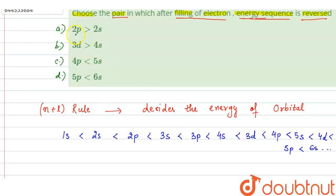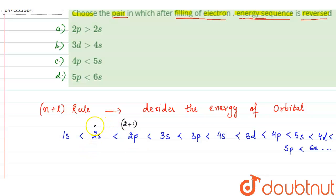In option A, it is given that 2P energy is greater than 2S. This is true. 2P energy is greater than 2S because for 2P, N plus L equals 2 plus 1, which gives 3. For 2S, N plus L equals 2 plus 0, which gives 2. So this ordering is correct.